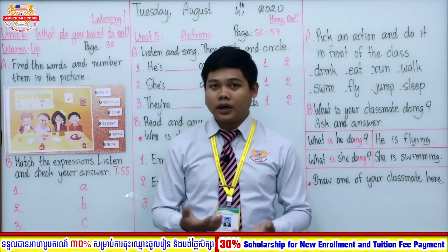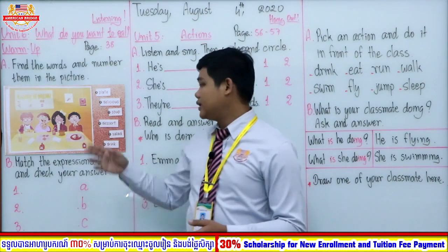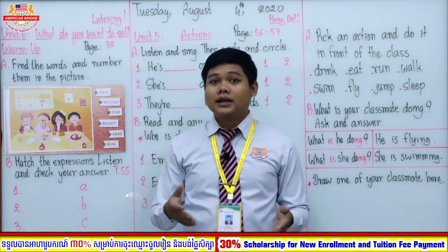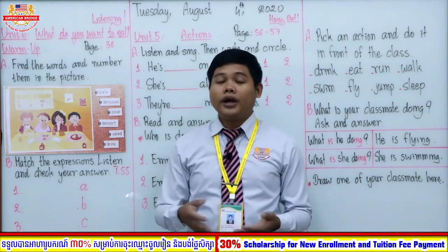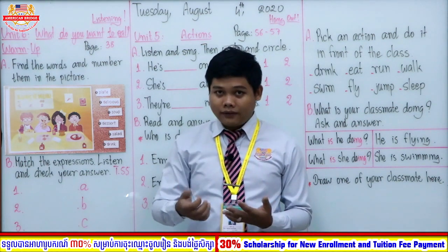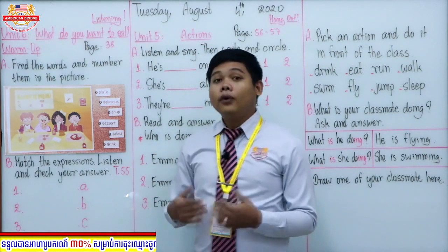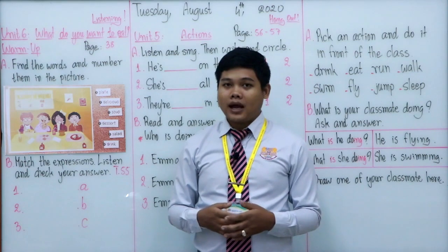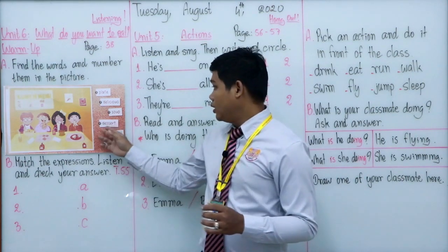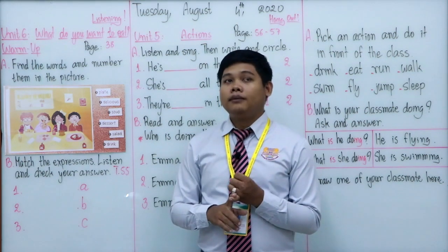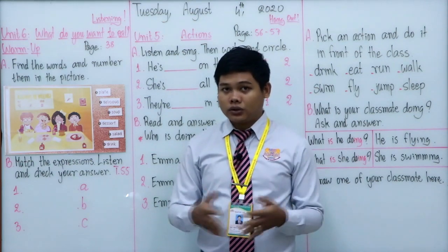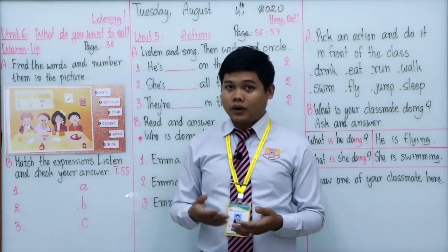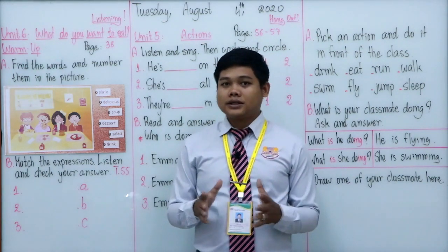Number three is soup. Do you like to eat soup? It's a kind of food — in Cambodia we eat soup with rice. Number four is dessert — it's a kind of sweet that we eat after a meal. It can be fruit, like banana. We call it dessert — something sweet you eat after your meal.